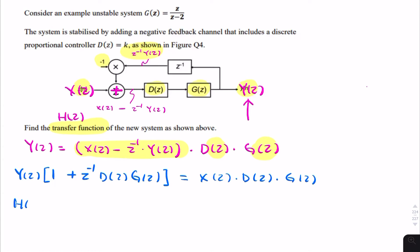So the transfer function h of z is simply y of z divided by x of z. So it's d of z g of z divided by all of this. That's 1 plus z to the minus 1 d of z g of z. So that's the answer. That's the transfer function.